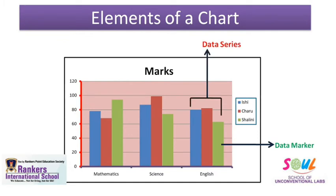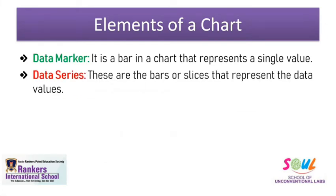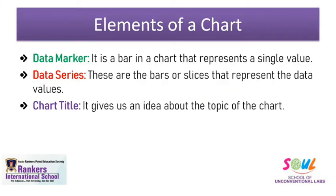Next is data series. Data series represents a specific set of information — it is the collection of those bars. For example, the three bars representing English marks of all three students form a data series. So we can say that data series are the bars or slices that represent the data values. The next component is chart title. The chart title tells you what the chart is about, so the chart title gives us an idea about the topic of the chart.